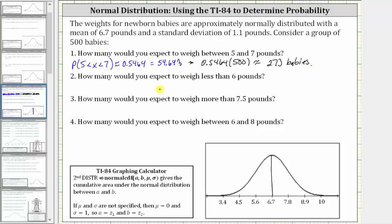For number two: how many of the 500 babies would you expect to weigh less than six pounds? We first need to find the probability that x is less than six, and then we'll use that probability to find that percent of 500 babies. Notice six pounds is approximately here. We want the probability that x is less than six, and therefore we need the area on the left — this area here.